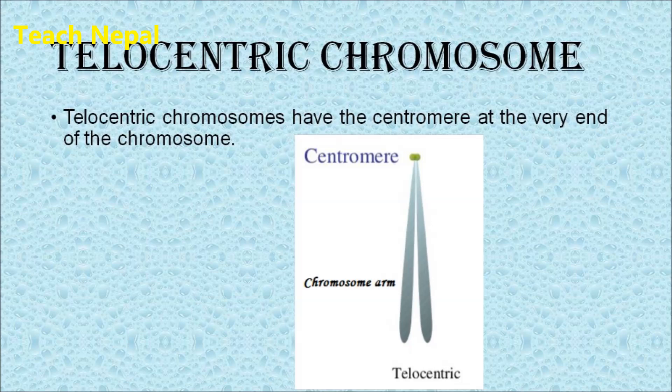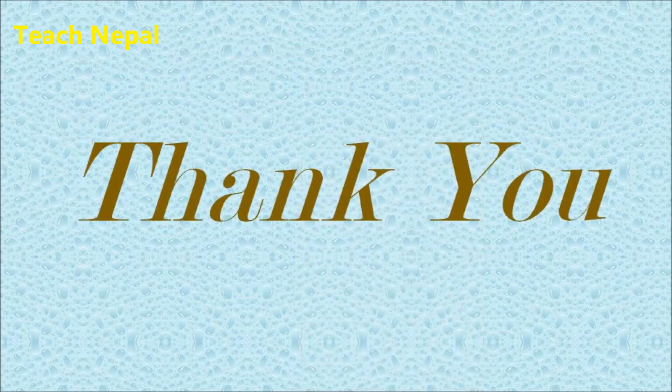In the telocentric chromosome, the centromere is located at the very end of the chromosome. This concludes the first part on chromosomes. We will continue with sex determination in the next part. Thank you.